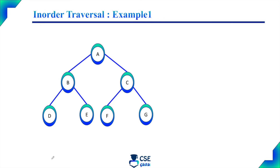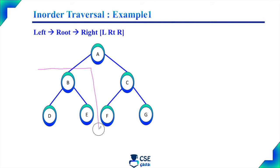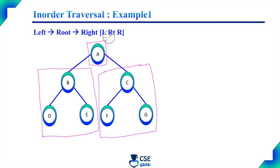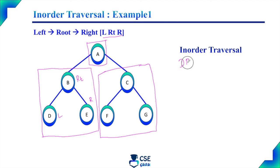This is a given binary tree. We need to find the inorder traversal for this binary tree. Inorder traversal is: left subtree visited first, then root node, then right subtree — simply left, root, right. The left subtree: B is the root node, D is the left child, E is the right child. So the output is D (left child), then B (root node), then E (right child). Now the left subtree is over, then move to the root node and print the root node — root node is A.